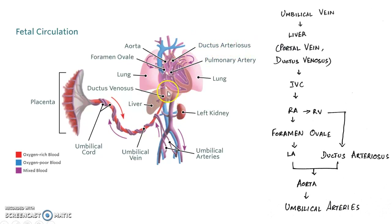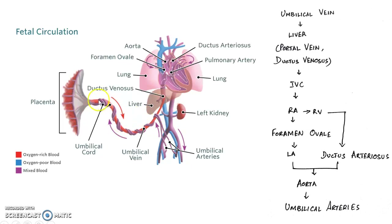So blood in the pulmonary artery is directed to the aorta through a structure called ductus arteriosus. As told earlier the blood in the aorta will supply the various parts of the fetus. The deoxygenated blood from various parts of the fetus is collected by the umbilical artery and then they reach the maternal circulation.